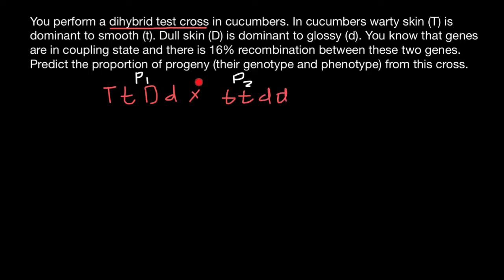From our problem, we also know that these two genes are on the same chromosome because they undergo recombination, which is 16%, and that means they lay close to each other. So let's imagine this is one chromosome and this is another chromosome. We are also told that these two genes are in coupling state, which means dominant allele T and dominant allele D are on the same homologous chromosome.